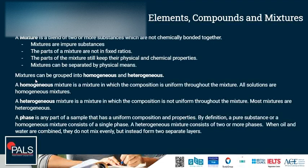Mixtures can be grouped into two types: homogeneous and heterogeneous mixtures. A homogeneous mixture is a mixture in which the composition is uniform throughout the mixture. All solutions, for example, are homogeneous mixtures. A heterogeneous mixture is a mixture in which the composition is not uniform throughout the mixture. Most mixtures are heterogeneous.